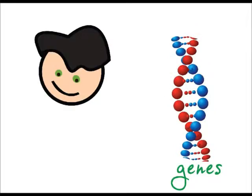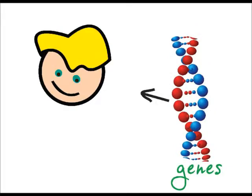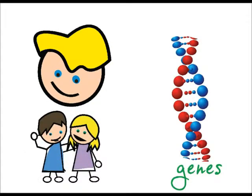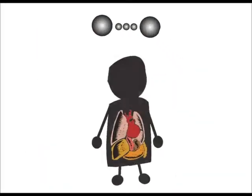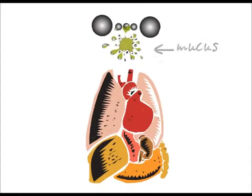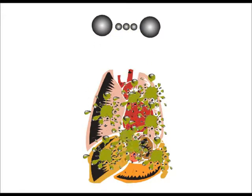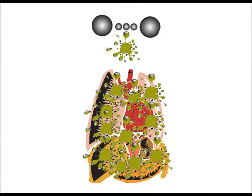When we are born, our genes determine our eye color, hair color, and if we look like mom or dad. A defective gene causes our bodies to create a really thick mucus that covers our internal organs, especially our lungs, making it hard for them to work correctly.